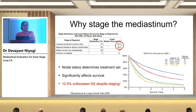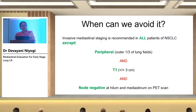Despite all kinds of staging we do, 12.5% of the time we are still caught unawares with N2 disease. As you can see in the survival curves, the red line is N1 node and the green line — where survival drops precipitously — is the N2 nodal status involvement.